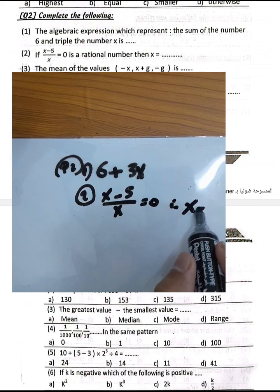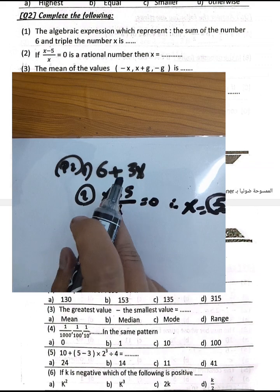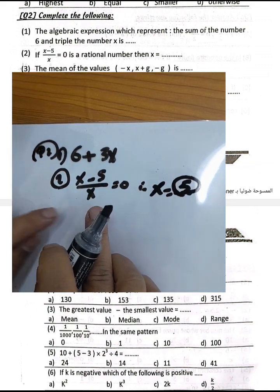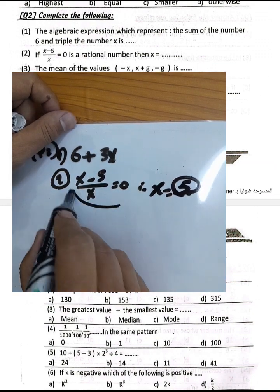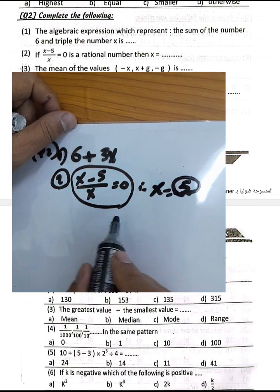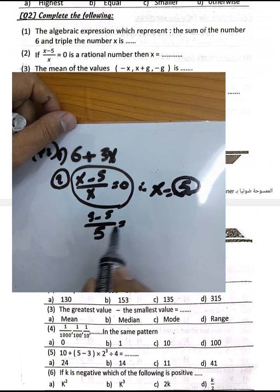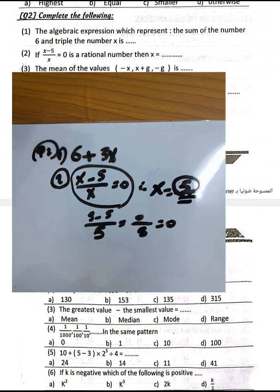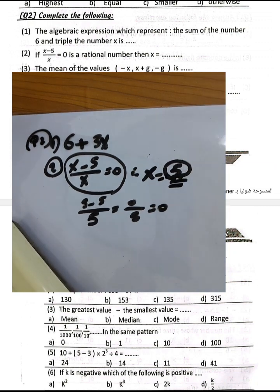If we put x equal to 5, then 5 minus 5 equals 0, and 0 divided by 5 equals zero. So this expression equals zero when x equals 5, because 5 minus 5 over 5 equals 0 over 5, which is zero. Therefore x equals 5.